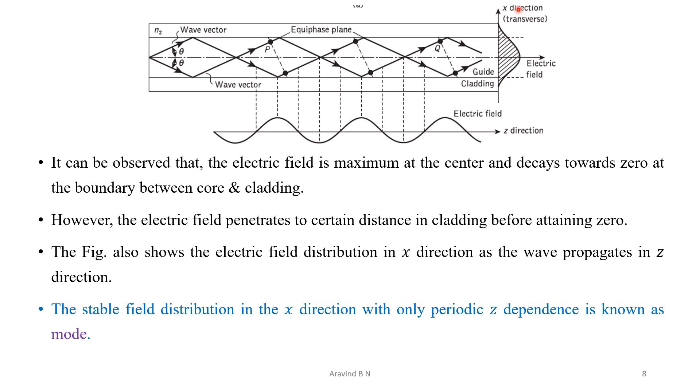Now, it can be observed with respect to this electric field that the electric field is maximum at the center of the guide axis and it will diminish towards the zero as it moves towards the cladding. We can also make one more observation that as it moves towards the cladding, it extends to certain region in the cladding before getting equal to zero.